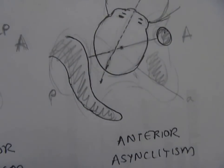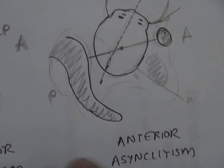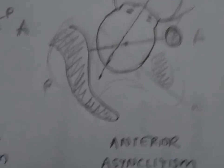And when you can feel the anterior parietal bone, you will find that the sagittal suture is in the posterior position of the mother's pelvis, so this is known as anterior asynclitism.